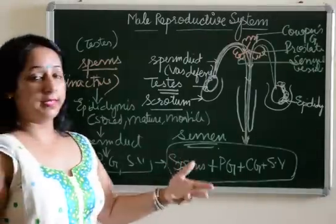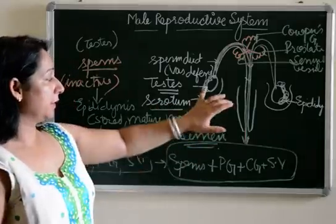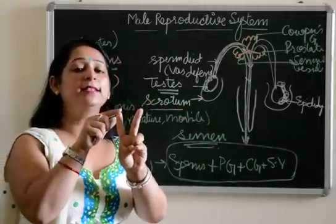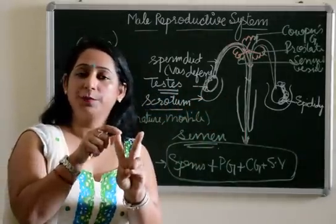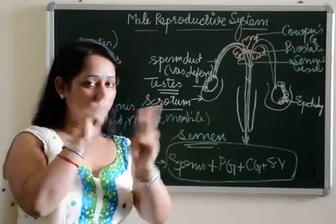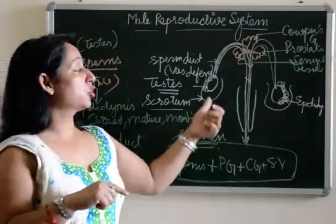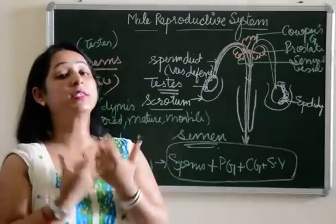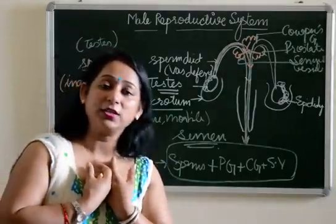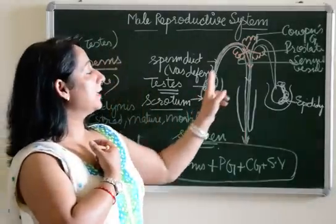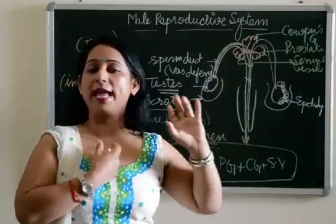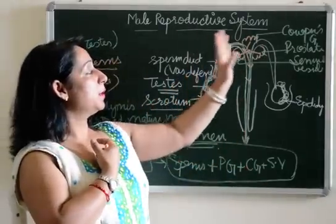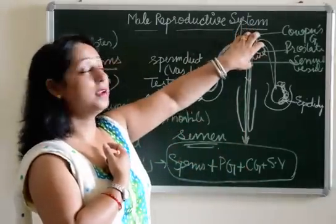To summarize the key points: the testes have two functions — one is formation of sperm, second is production of testosterone. The scrotum is a thin skin-like structure which encloses the testes and protects them. The sperm duct's function is to carry the sperm from the testes to outside the body.